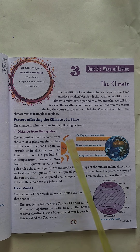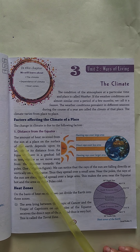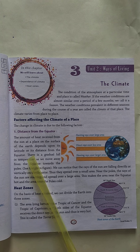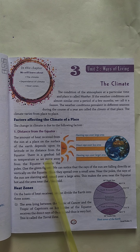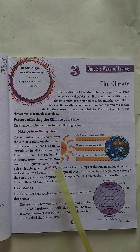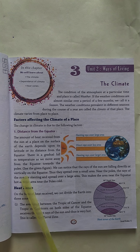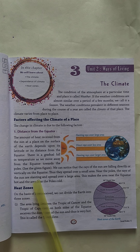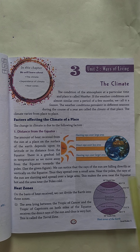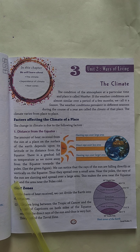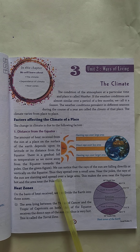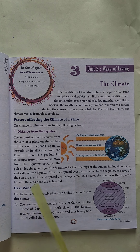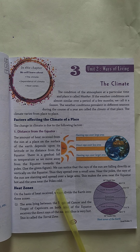First, distance from the equator. The amount of heat received from the sun at a place on the surface of the earth depends upon its latitude, or its distance from the equator. As we move away from the equator towards the poles, the rays of the sun fall directly or vertically on the equator, spreading over a small area. Near the poles, the rays of the sun are slanting and spread over a large area. This makes the area near the equator hot and the area near the poles cold.